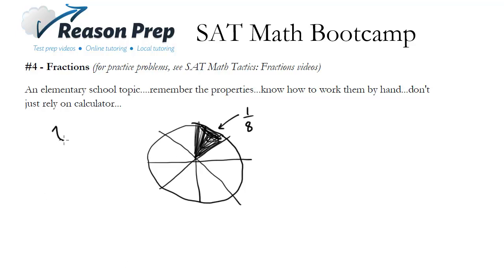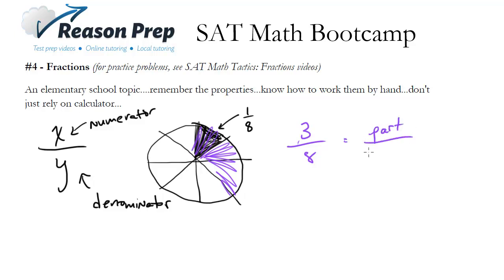So for a fraction we've got some number over some other number and the top number is known as the numerator and the bottom number is known as the denominator. So you can imagine we could do maybe these three pieces. Well it would be 3 over the total number of pieces which is 8. So you can think of this as the part that you're looking at over the whole that we're looking at.